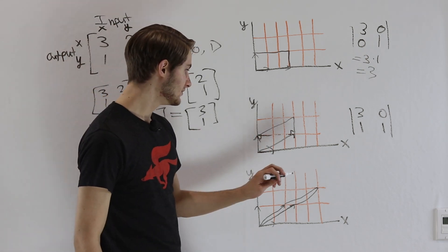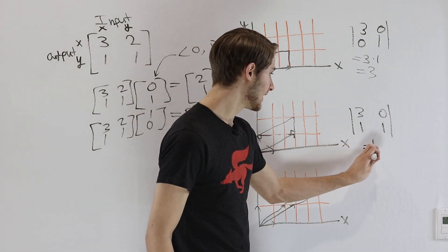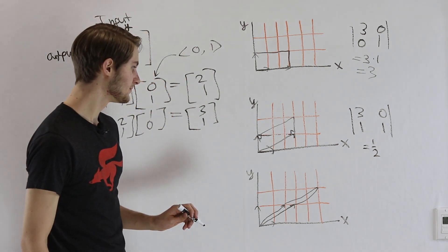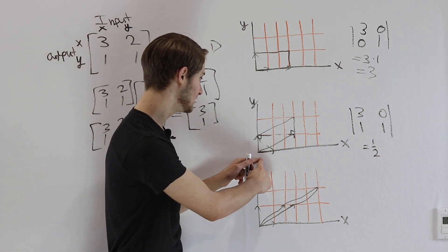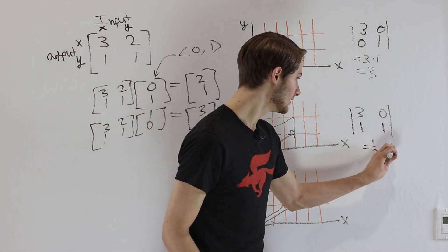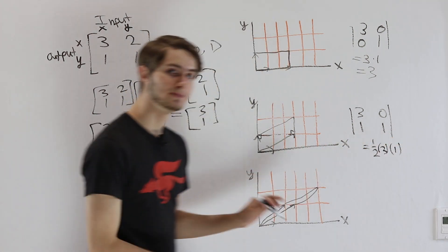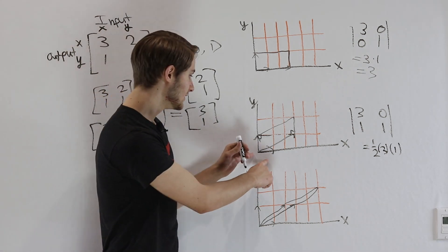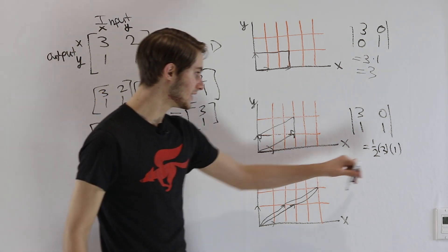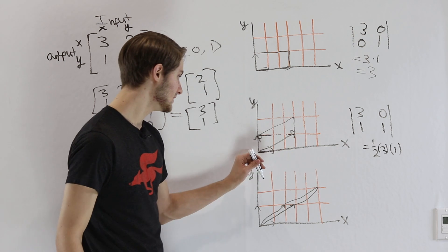Well the area of either one of these triangles is going to be 1 half of the base, which in this case is 1, times the height, this direction which is 3. Or you can do the base and the height the other way. Either case, we're going to have a final area of 1 half times 3 times 1.